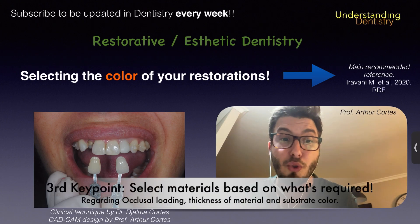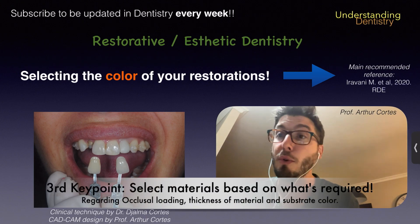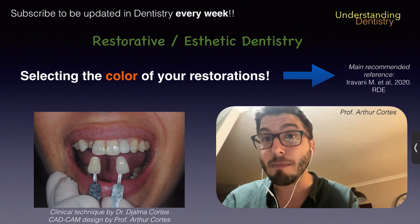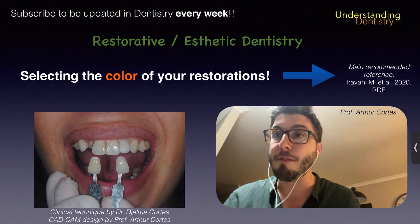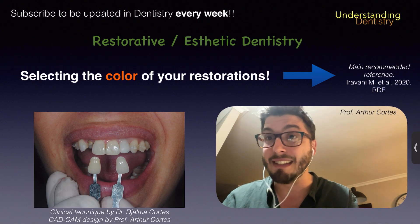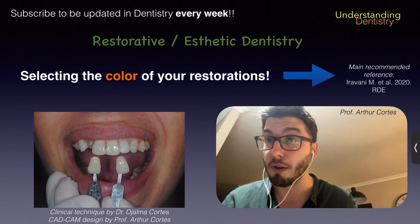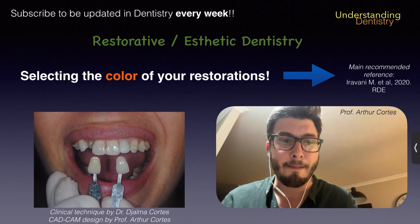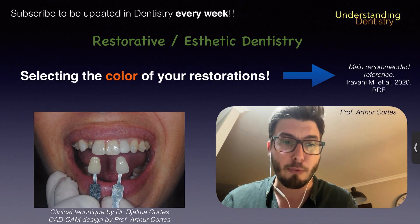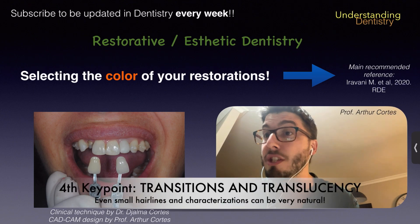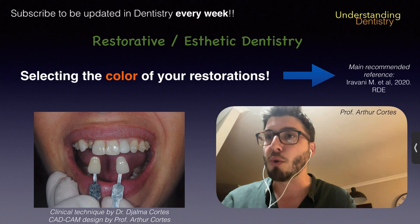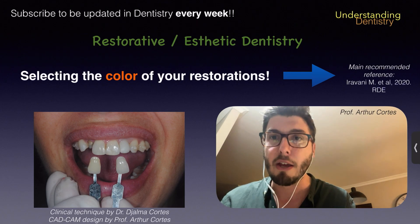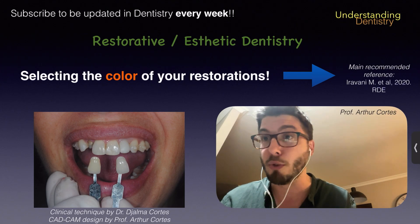The third key point is that we should select materials based on occlusion and on the underlying color. We may have dark substrates, as seen in this preparation. If you have brown dentin, the dentin will dictate the color of the tooth and play a main role in this selection. The fourth key point is that we should make the restoration natural, with transitions and translucency if possible. Take those four key points into consideration.